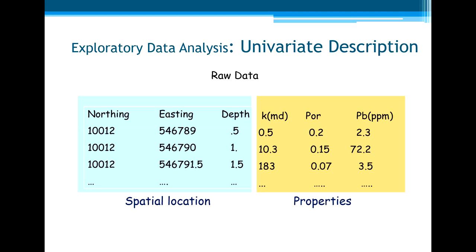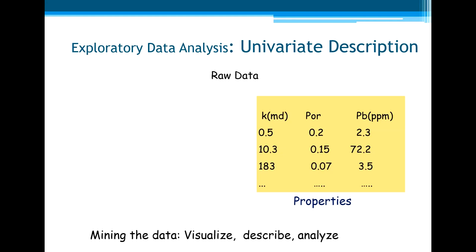This is a typical format of our raw data. We have the spatial location of each sample: northing, easting, depth. Normally it can be notated by X, Y, and Z. And the properties: permeability, porosity, and the pollutant concentration, ppm. Now, let's forget for the moment the spatial location, and let's look at the properties to mine the data. Visualize, describe, and analyze.